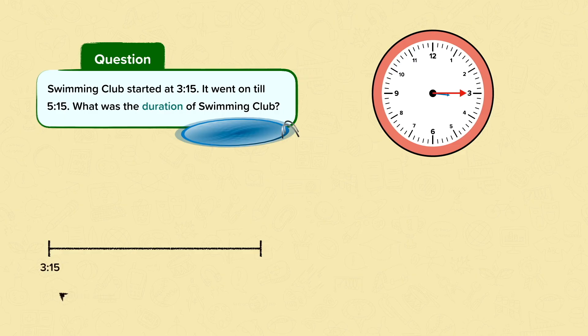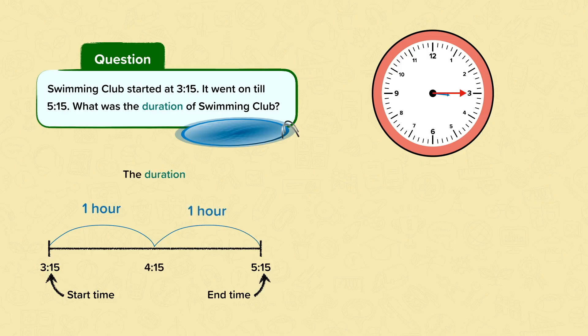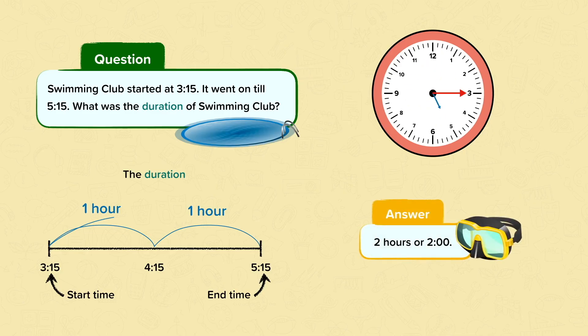It started at 3:15 and it ended at 5:15. We then need to count on in hours to find the duration. So we count on one hour to 4:15 and another hour to 5:15. We can then count these hours: 1, 2. Then we know the duration. The duration of the swimming club was 2 hours.